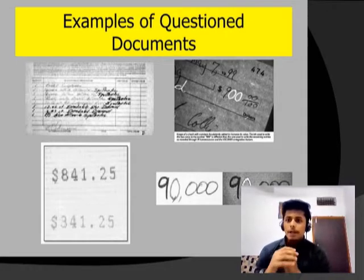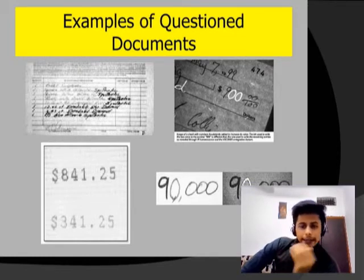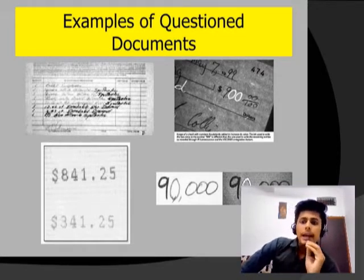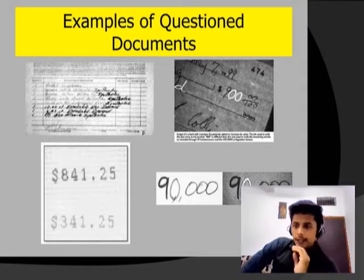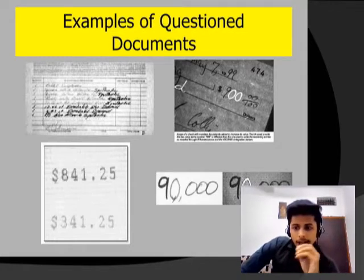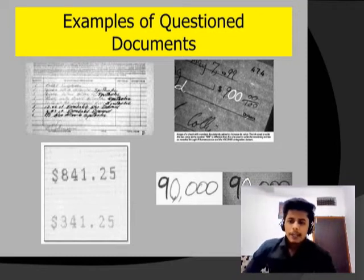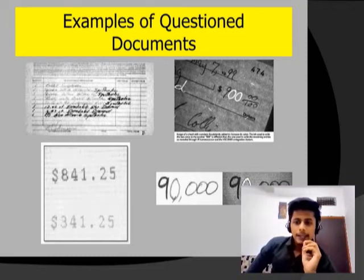Here are some examples of questioned documents. First, some parts have been erased from the document. Second, you will see that 9 has been added to 20. In the third, where it was written 3-4-1.25, it was changed to 8-4-1.25. And in the last image, you will see that 9 has been added to 10.